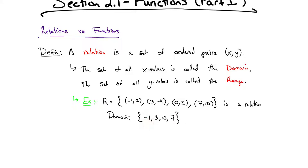We could arrange these in ascending order, but it's not going to be necessary unless the problem asks for it. The range is the set of all y values: 2, -4, 10. The value 2 is repeated twice, so we only need to write it once. Our range is 2, -4, and 10.